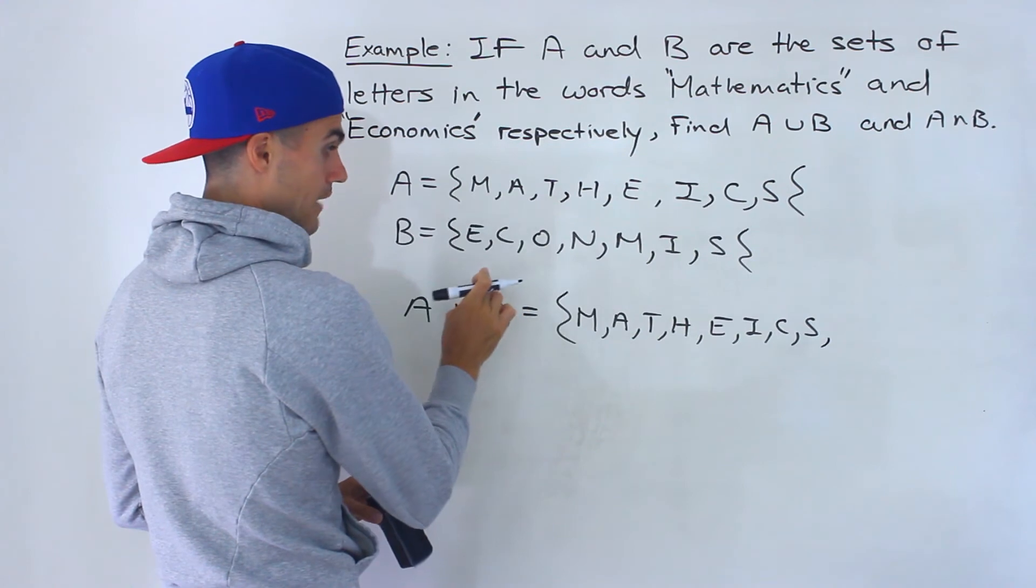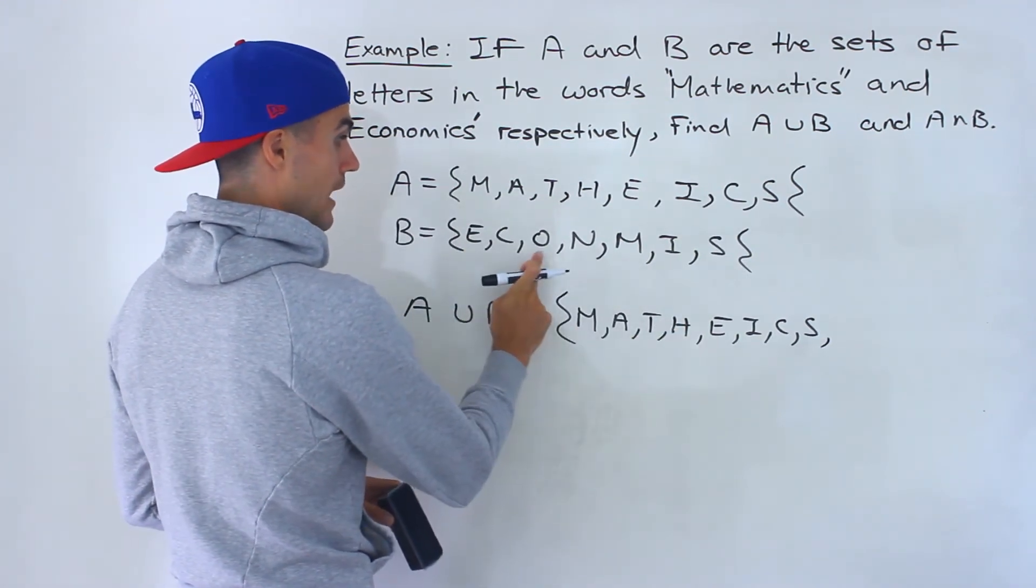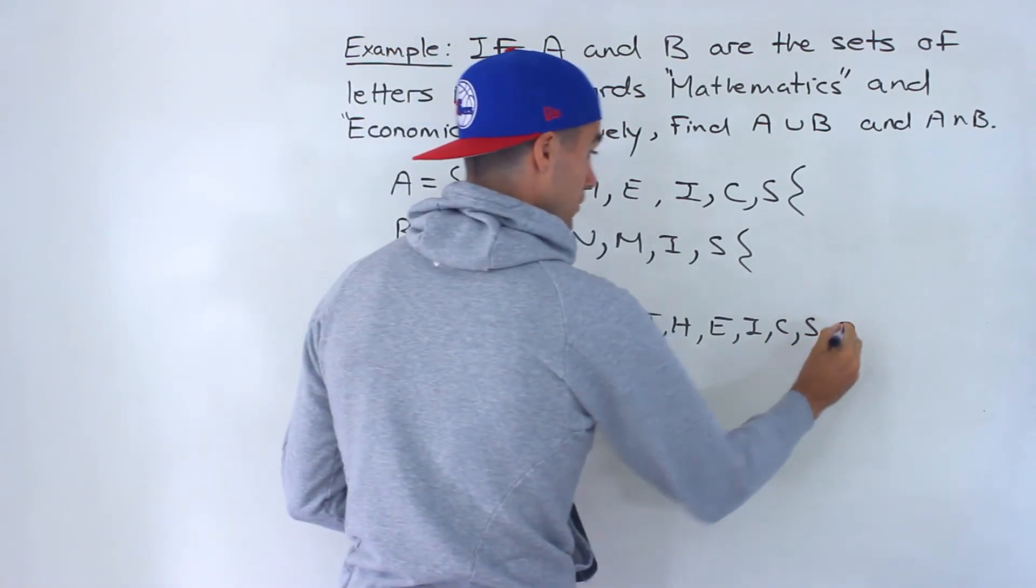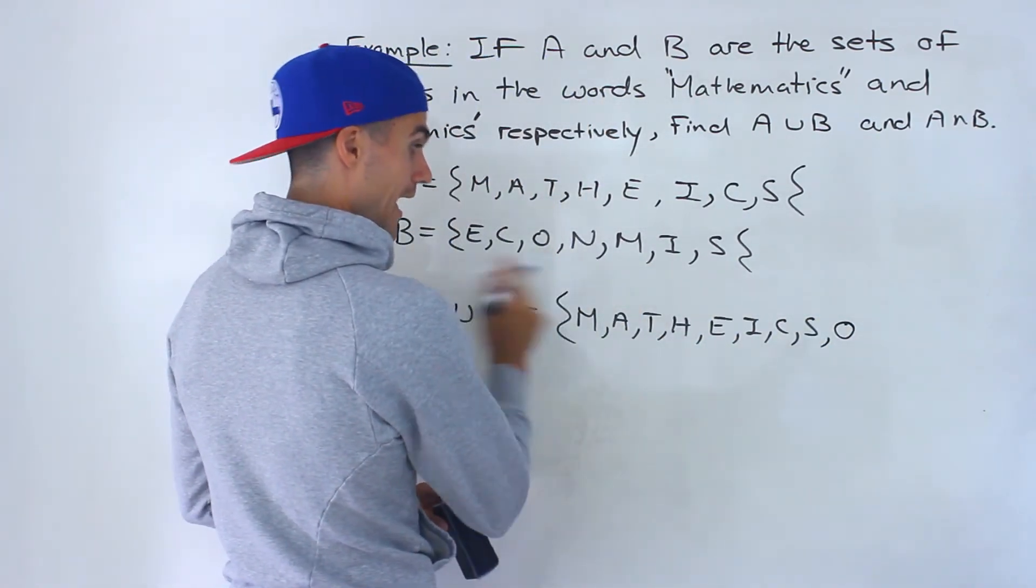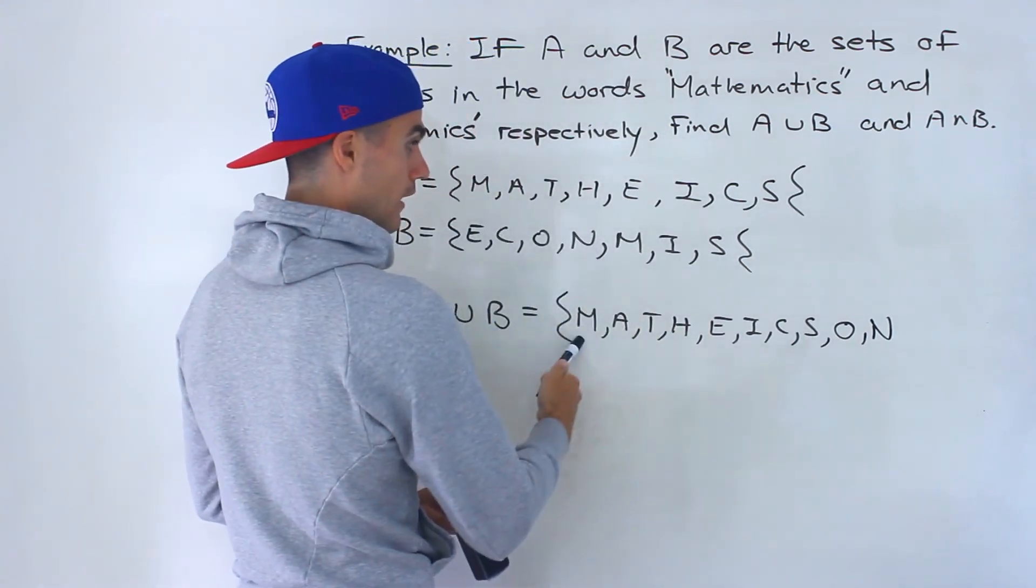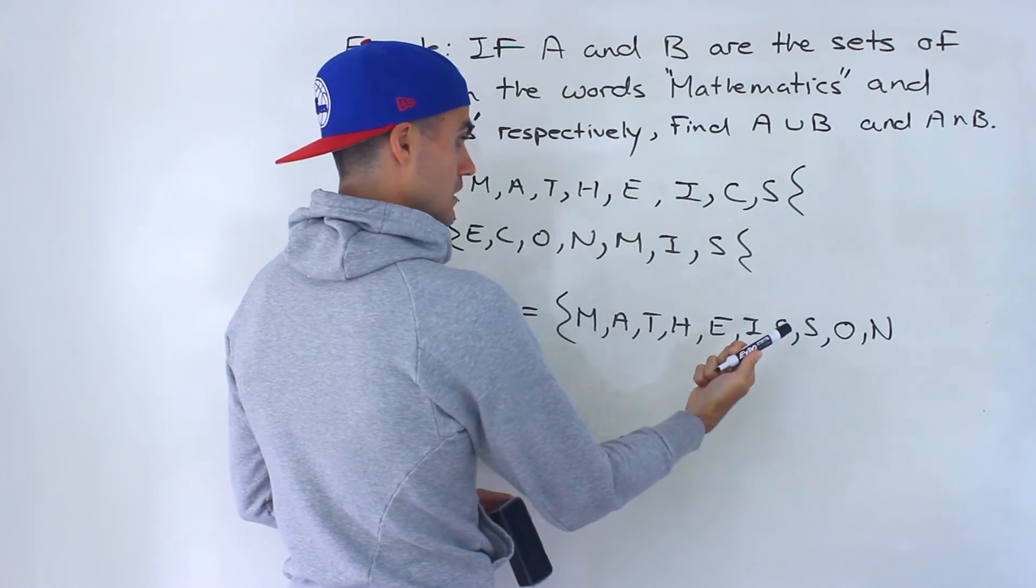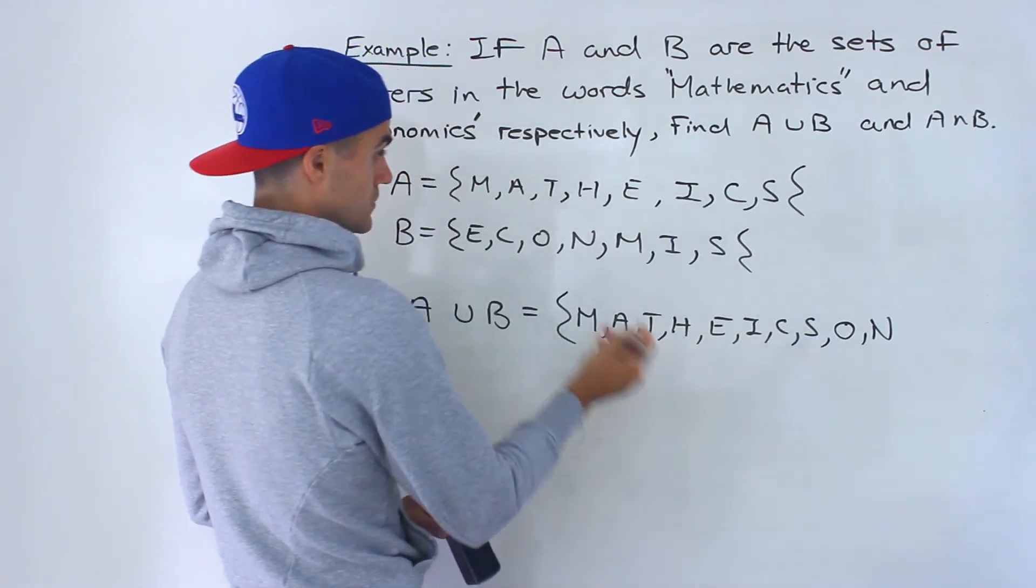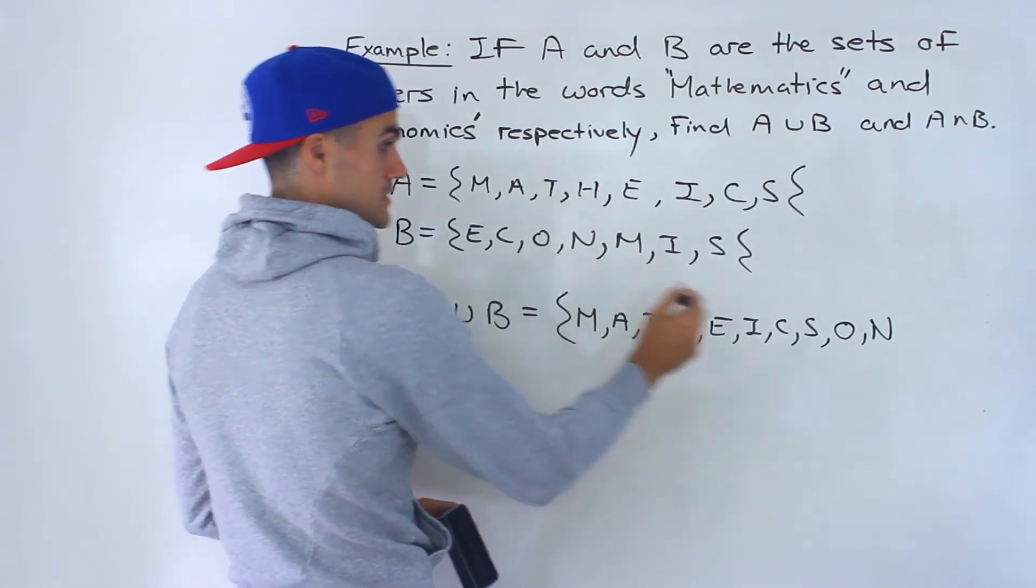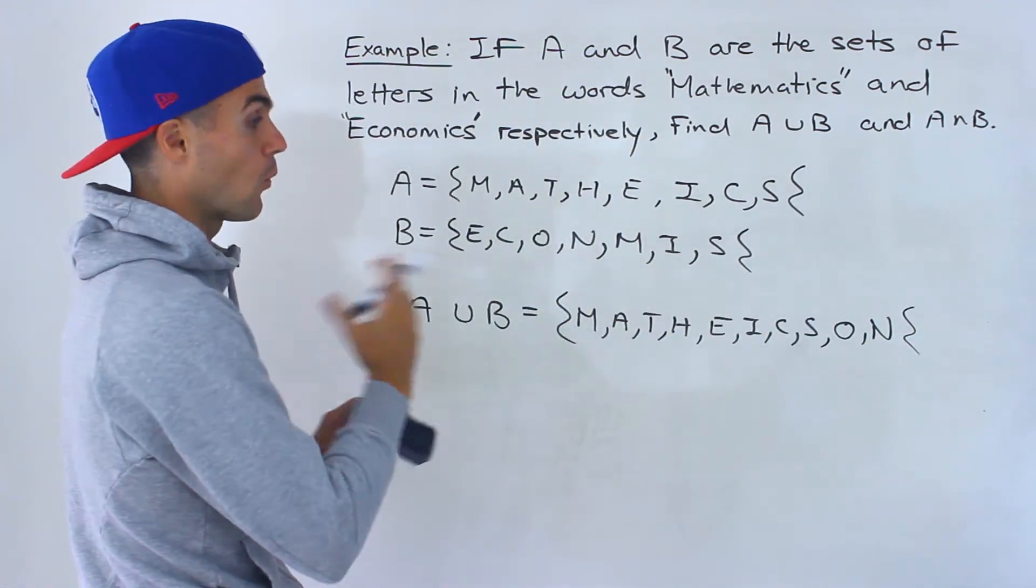So all of these elements in mathematics and then what we can do is go through each of these letters and see which ones haven't appeared. E we already have, C we have, O we don't have so that would be there, N we don't have so that would be there, M we have, I we have, S we have as well. So we just added the O and N because those weren't there. It's A or B, it has to be in just one of them.